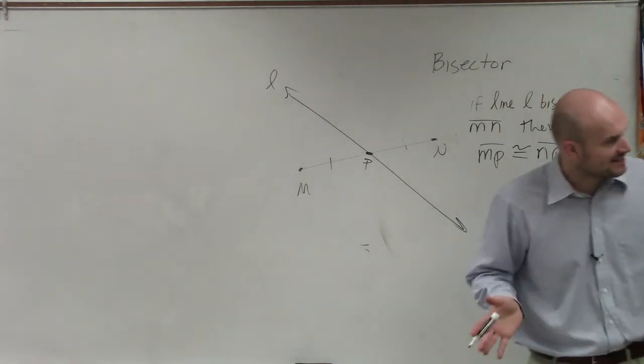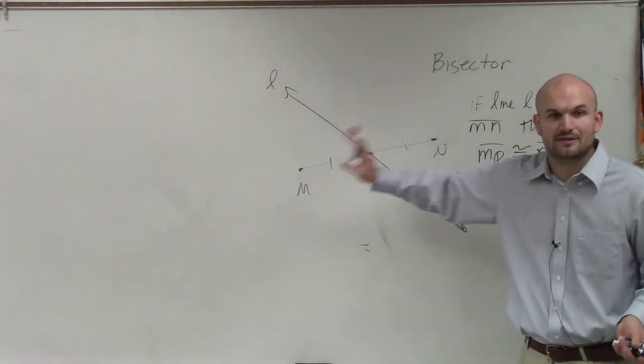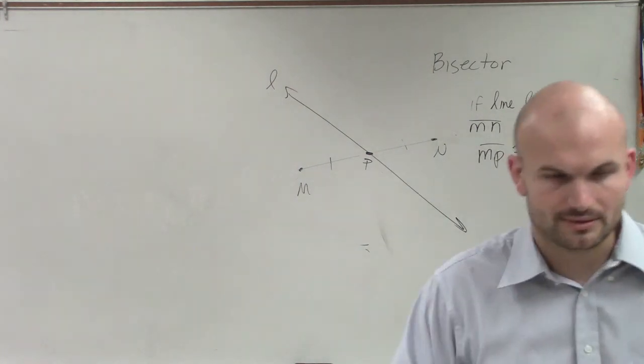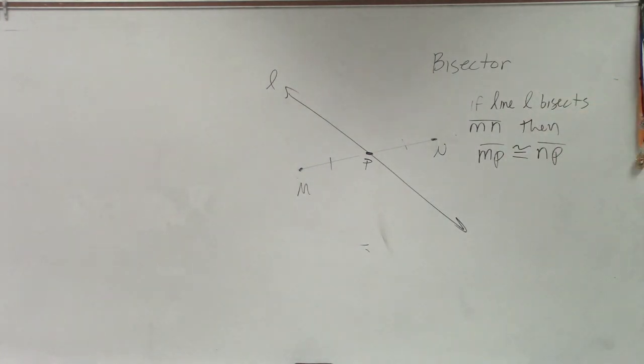So when we have something bisected, what that means is cut in half, so these two measures are equal to each other. That's a bisector.